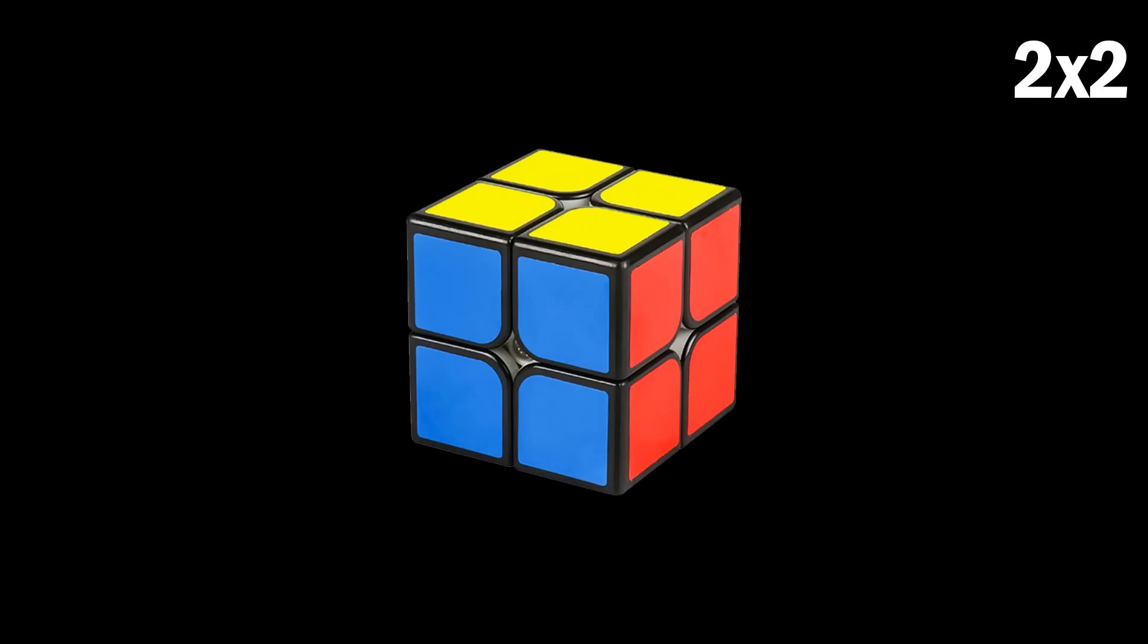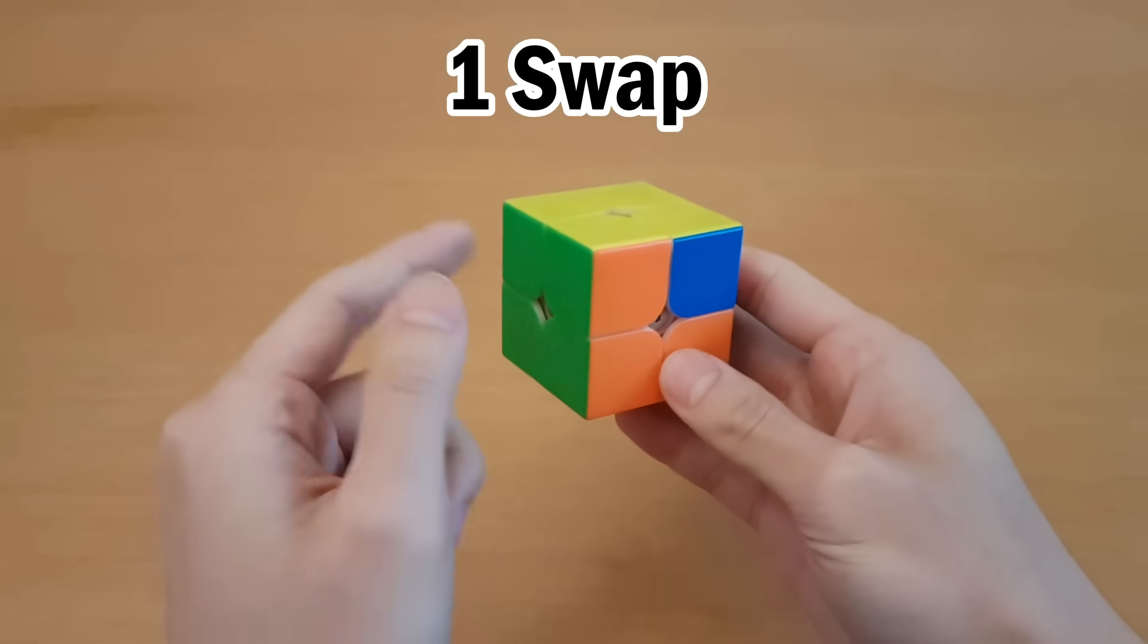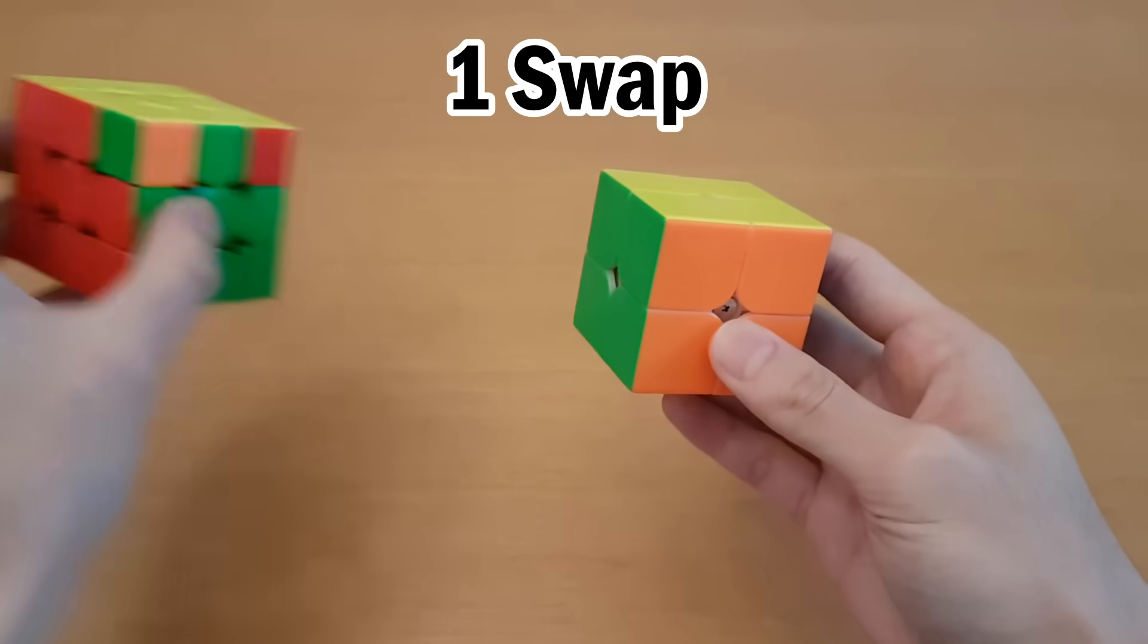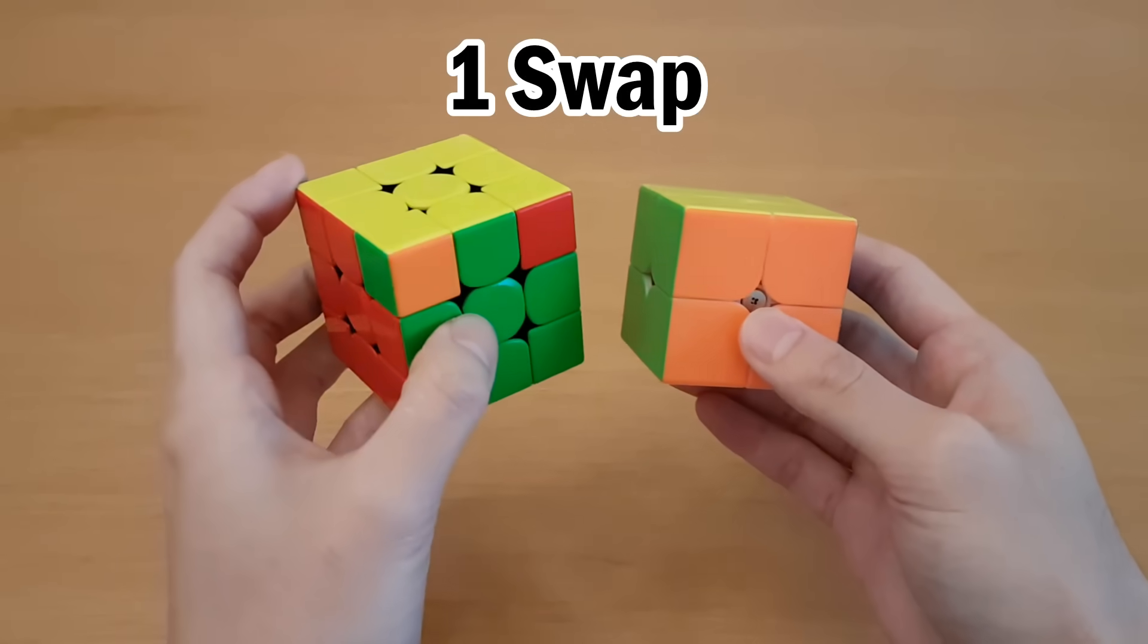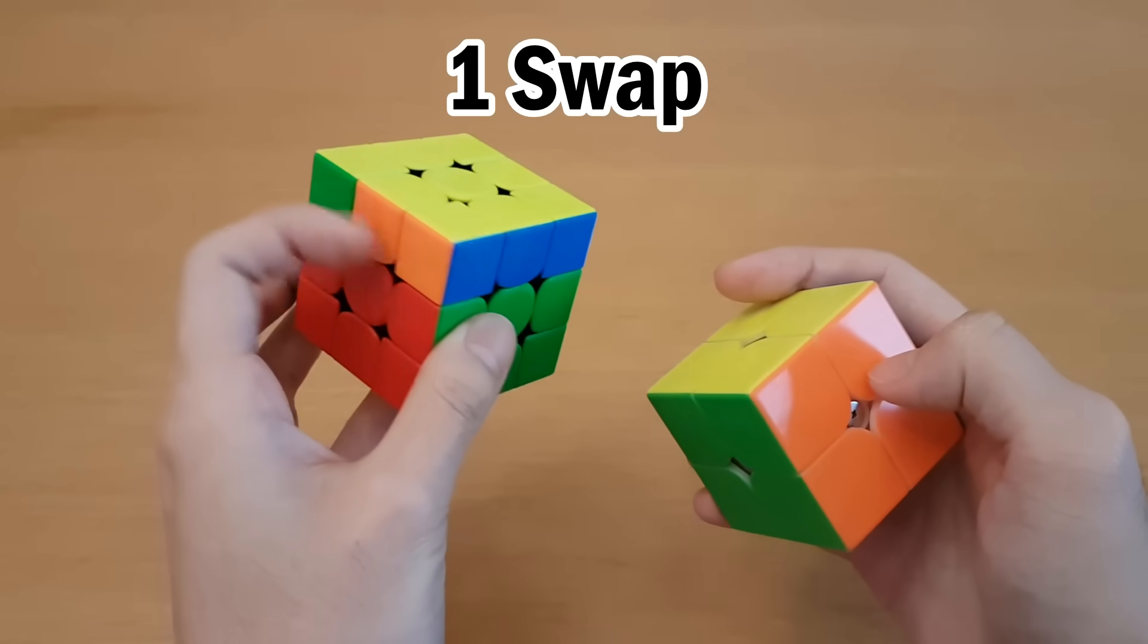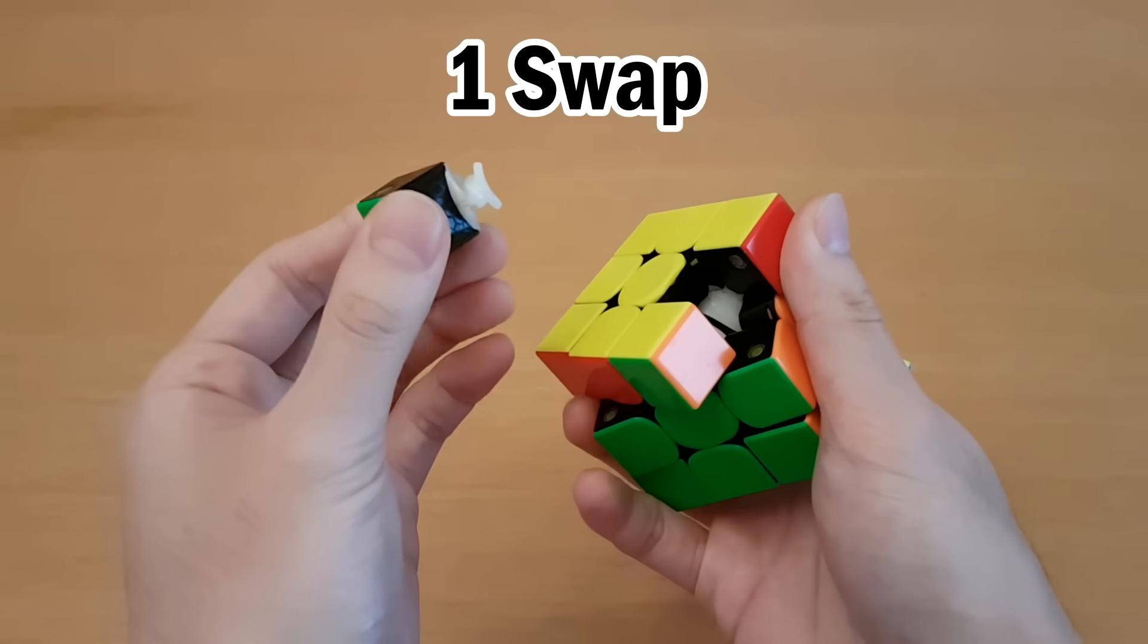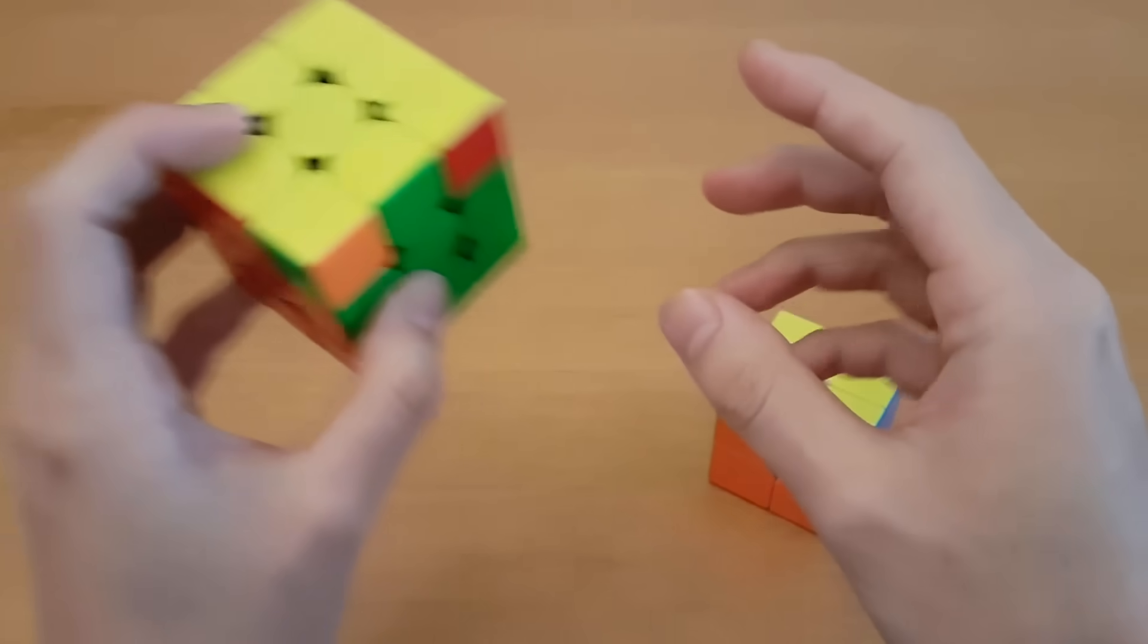To start off, we'll look at the easiest example, which is a 2x2. On a 2x2, it's absolutely possible to just swap two pieces. And the thing is, it's also possible to swap two pieces on a 3x3. It's just that you can't do this by doing regular turns. The only way this is possible is by taking pieces out and rearranging them. When you can do that, the rules of the game are really different.